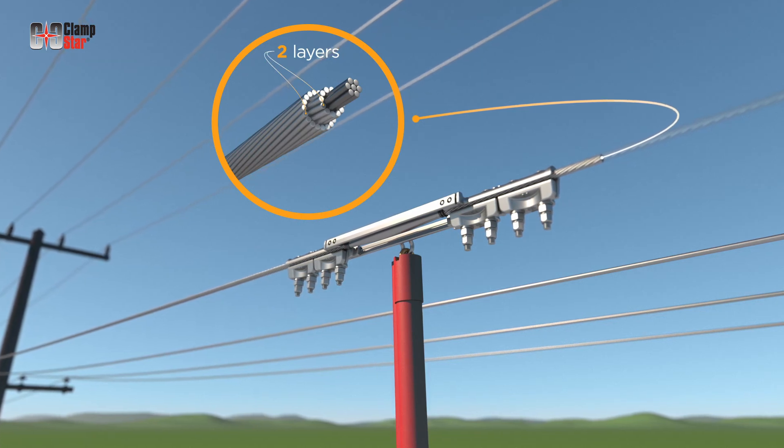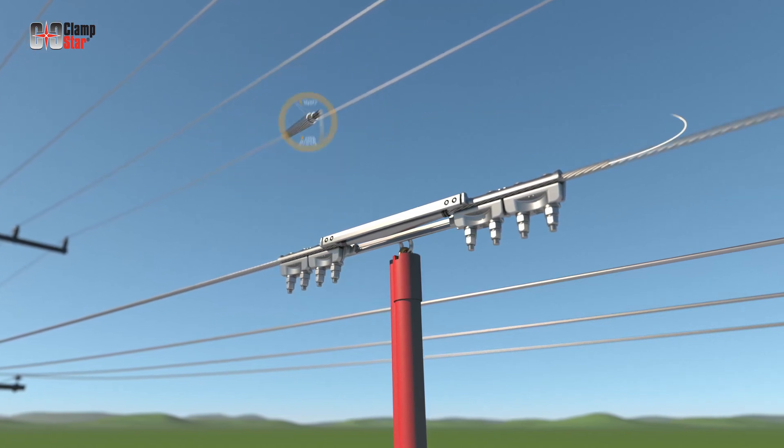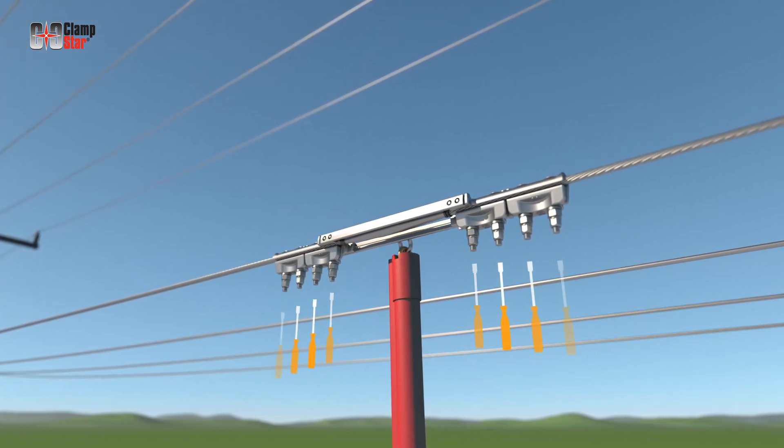For example, assume a conductor has two layers of aluminum stranding over seven steel core strands. Apply torque to each nut in succession, one time.